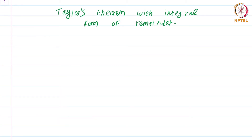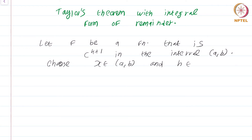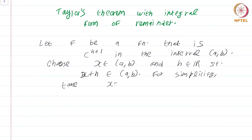Let us begin with the hypothesis. Let f be a function that is C^(k+1) on the interval [a, b]. Choose x in (a, b) and h in R such that x plus h is also an element of (a, b). For simplicity, take x to be 0 and h greater than 0.